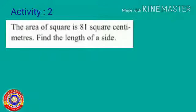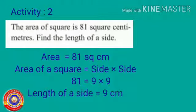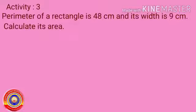Activity number two: the area of a square is 81 square centimeters — find the length of a side. You all know that all the sides of a square are equal. Here the area is given as 81 square centimeters. Which number can be multiplied two times to get 81? Yes, 81 is equal to 9 into 9, so the length of a side is equal to 9 centimeters.